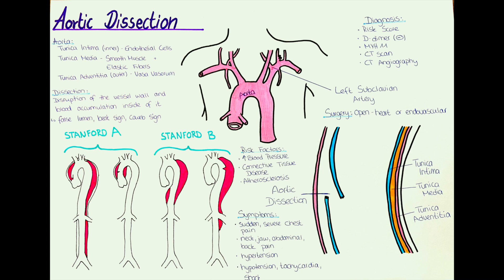Let's now talk about aortic dissection. In an aortic dissection, these layers get basically separated and blood accumulates inside the wall of the aorta. As you know, the aorta is a huge blood vessel and really important for the blood supply of the whole body. Usually in most cases, the blood accumulates in between the tunica intima and the tunica media — so it is basically like having a hematoma but in the aorta.